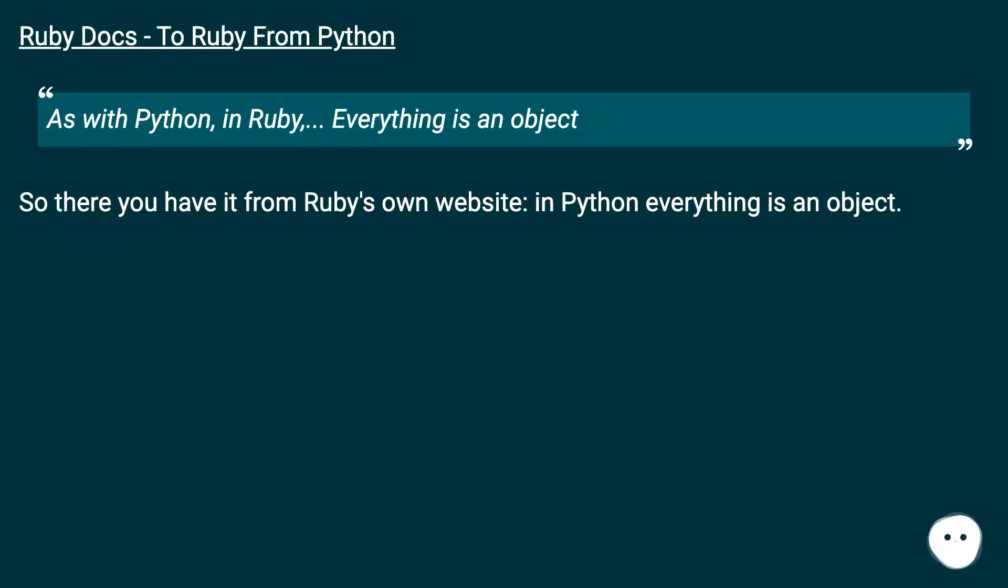Ruby docs to Ruby from Python: As with Python, in Ruby, everything is an object. So there you have it from Ruby's own website. In Python, everything is an object.